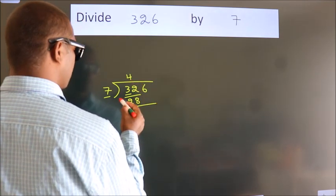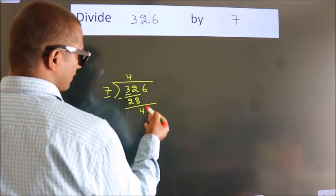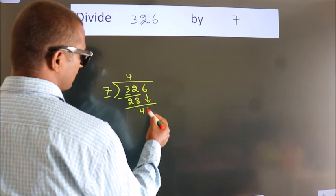Now we should subtract. We get 4. After this, bring down the beside number. So 6 down. 46.